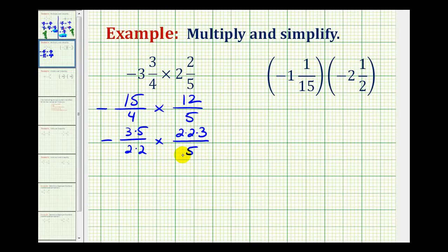So in this form, we can identify all the common factors between the numerators and denominators that would simplify to one. So here we have five over five, and here we have two over two and two over two.